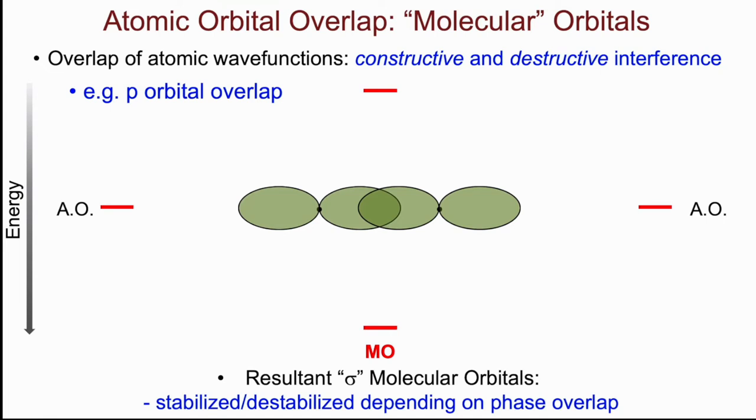Depending on the phase of the overlap in this region here, the resultant, as we call it, sigma overlap, sigma implying that the orbitals have overlapped, if you like, end on end, can either be destabilized or stabilized, depending on the phase of that overlap.